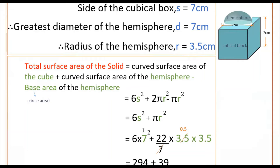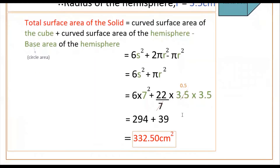Substituting s = 7 cm and r = 3.5 cm: 6 × 7² + 22/7 × 3.5 × 3.5 = 6 × 49 + 22 × 0.5 × 3.5 = 294 + 38.5 = 332.5 cm². So this is the total surface area of the solid.